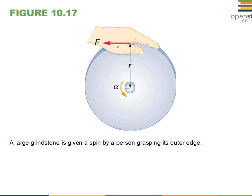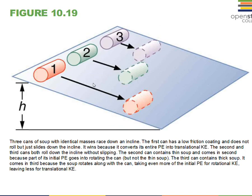A person is delivering force perpendicular to the lever arm, which creates a torque and angular acceleration. We get angular velocity and kinetic energy. The hand is doing work on this grindstone, delivering energy that becomes kinetic energy.